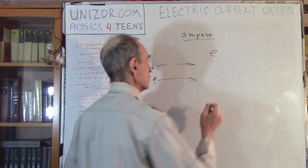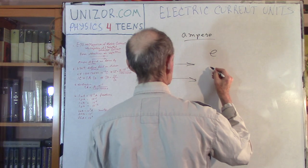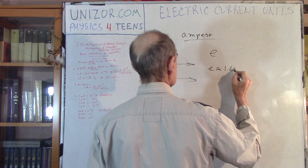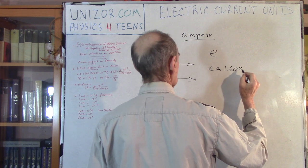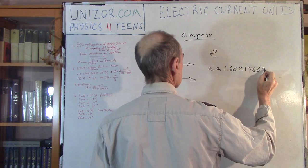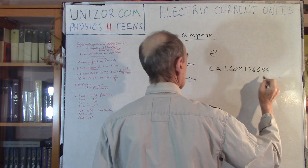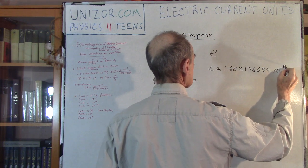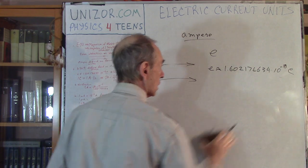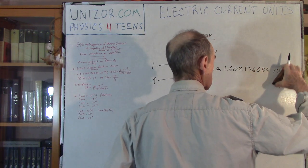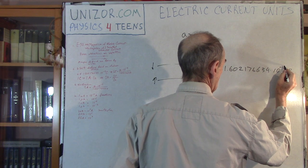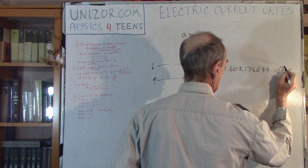And it was really measured, the charge of electron is equal to approximately 1.602176634 times 10 to the minus 19 of Coulomb. This is 19.